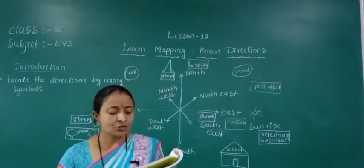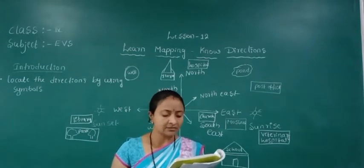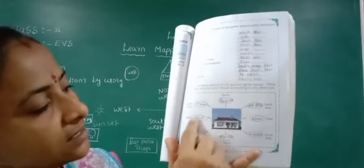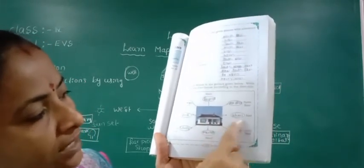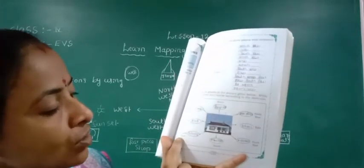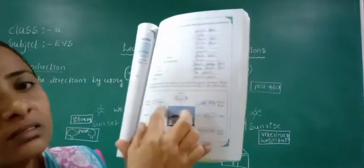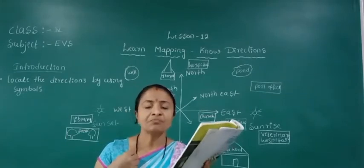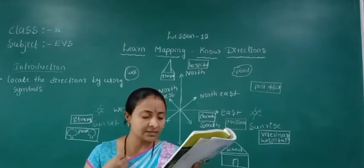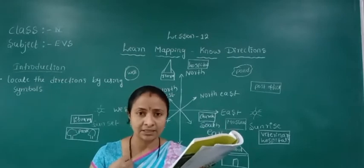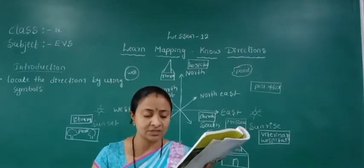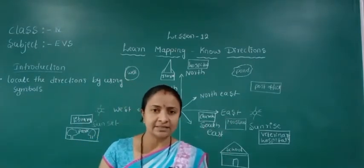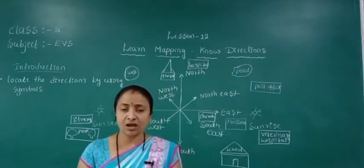In your house, as shown in the picture, write the things around your house according to the directions. In our house: north side — hospital, south side — market, east side — school, west side — park. North east — post office, south east — mosque, south west — library, north west — temple.